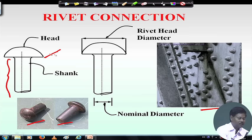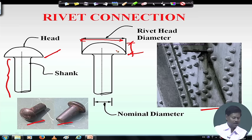The rivet head has a particular diameter called the rivet head diameter, and a rivet head height. The shank diameter is called the nominal diameter. Depending on the size of the nominal diameter and the type of material used, the strength of the rivet can be calculated accordingly.